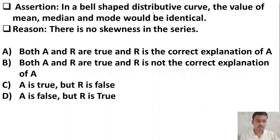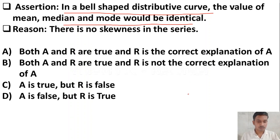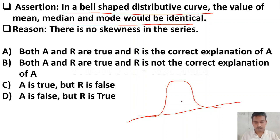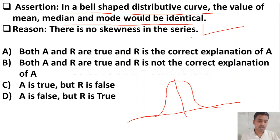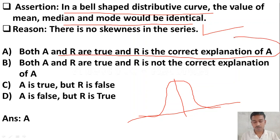The next question is an assertion and reason type. Assertion: in a bell-shaped distribution curve, the values of mean, median, and mode would be identical. Reason: there is no skewness in this series. In a bell-shaped distribution, mean, median, and mode are equal and there is no skewness. So both assertion and reason are true, and the reason is the correct explanation of the assertion. Option A is the right answer.